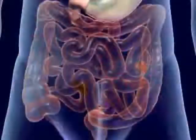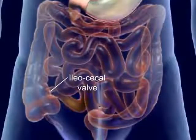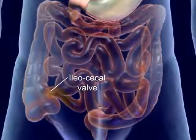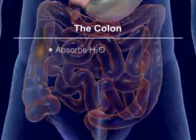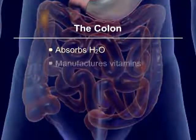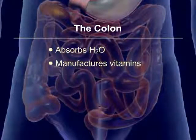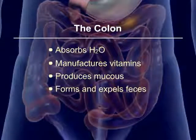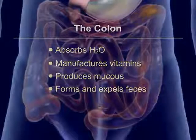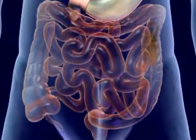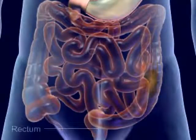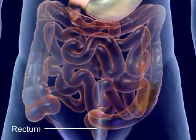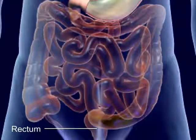The undigested food reaches the ileocecal valve and enters the large intestine or colon. The colon absorbs water, manufactures vitamins, produces mucus, and forms and expels feces. Mass peristalsis pushes the feces into the rectum, which stimulates the defecation reflex.